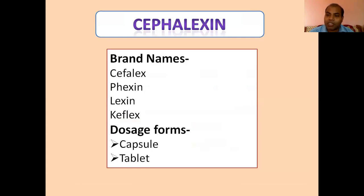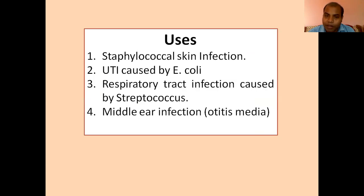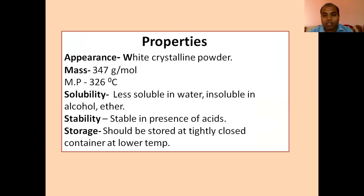The first compound under cephalosporins is cephalexin. Cephalexin comes under the first generation of cephalosporins. It is available under the brand names Cephalox, Texin, Lexin, Gelfex, etc., mostly available as capsules and tablets. It is useful for staphylococcus skin infections, UTI caused by E. coli, respiratory tract infections caused by Staphylococcus, and middle ear infection known as otitis.